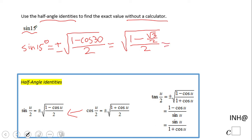Again, 1 is nothing else than 2 over 2, so we're going to end up with 2 minus square root of 3 over 2, everything over 2, which is going to be square root of 2 minus square root of 3 over 4.